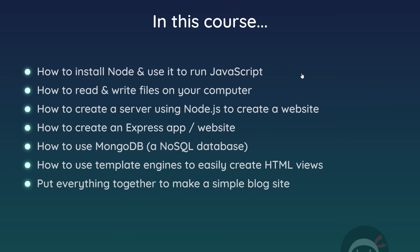In this course we're going to go from the absolute beginning. I'm going to show you how to install Node and use it to run JavaScript on your computer or server. Then we're going to see how to use Node to read and write files on your computer. We'll also see how to create a server and make a website using Node by listening for and responding to HTTP requests. Then we're going to dive into third-party packages — in particular Express — to create an Express app, which is a very popular way to build Node websites. Then we're going to introduce databases, in particular MongoDB, which is a NoSQL database, and use that to store data and create dynamic web pages. We'll also be using template engines — EJS in particular — to inject dynamic content into our HTML templates. Finally, we're going to put everything together to make a Node-powered website project.